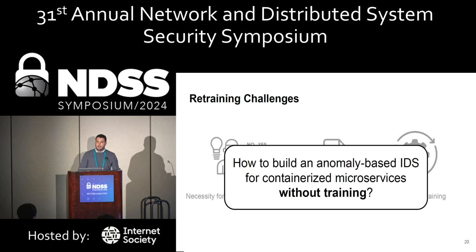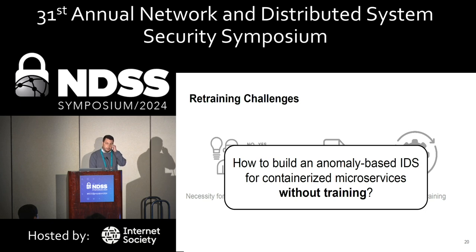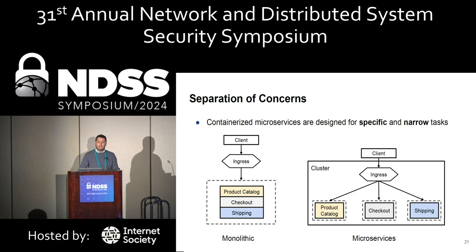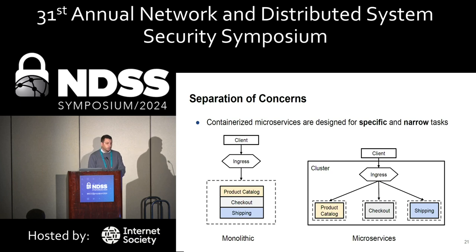The question we can ask here: how to build an anomaly-based IDS for containerized microservices without training? To do so, we need to leverage two properties of microservice-based environments. The first property is separation of concerns — in microservices, instead of having whole logic in one monolithic stack, you split an application into modular units, where each unit is dedicated to a very specific and narrow task.